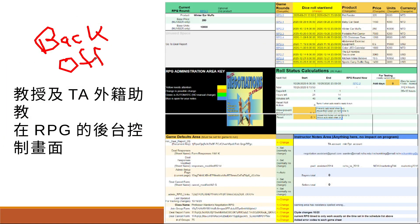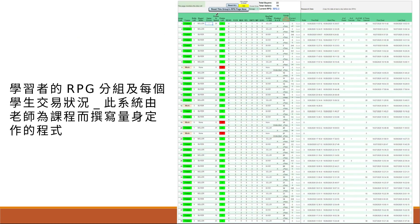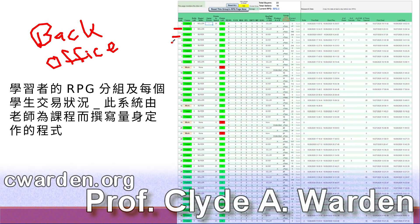This is what the professor and the TAs see, and it's quite complicated. This is all of the different RPGs being played. Here's an example of an RPG from the back office, and this is each group's progress in this specific RPG week by week. So each group is here.